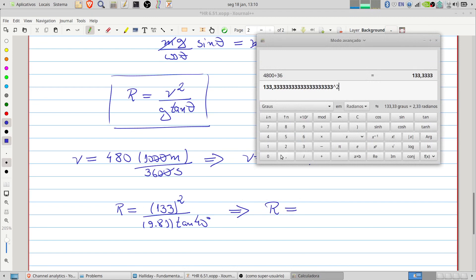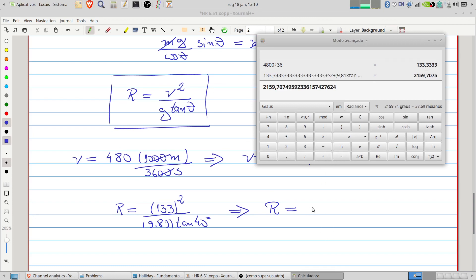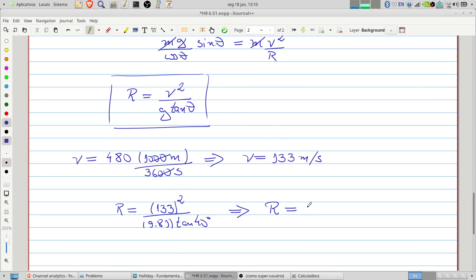113 squared divided by 9.81 times tangent of 40 degrees. So we will have 2,160 meters.